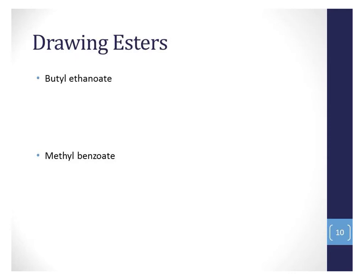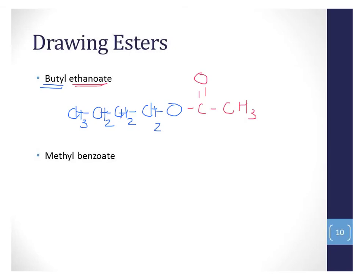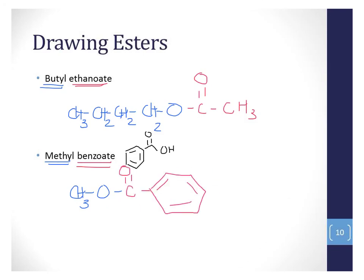To draw an ester, we work backwards. Butyl, since it ends in 'yl', is the part of the ester that doesn't have a C double bond O — the part that came from the alcohol. Ethanoate ends in 'oate', so it must have the C double bond O, giving us butylethanoate. In the second example, methyl is a chain just attached to an oxygen with no C double bond O. Benzoate comes from benzoic acid, which is a carboxyl group attached to benzene, giving us methylbenzoate.